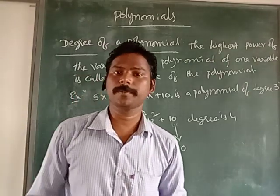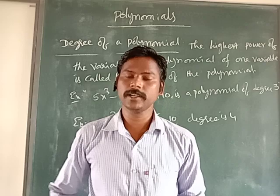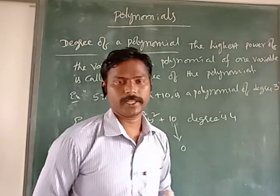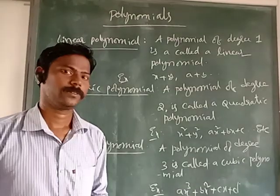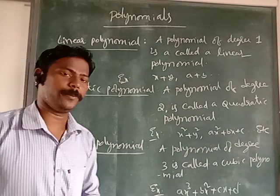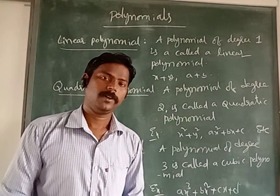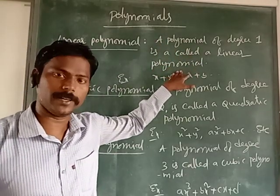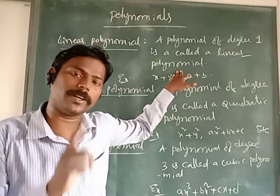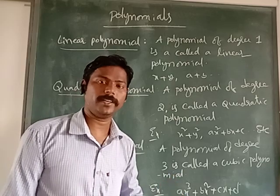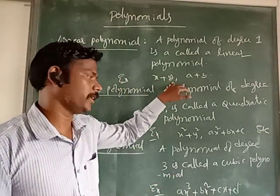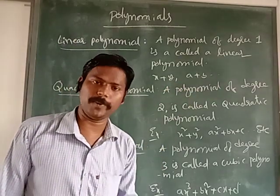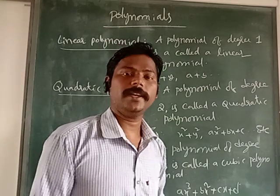Next, we see types of polynomials. Types are based on different degrees and different numbers of terms. The first type is the linear polynomial. A polynomial of degree 1 is called a linear polynomial. That means the highest degree of the polynomial is 1. For example: x + y, or a + b — here the highest degree is 1, so it is called a linear polynomial.